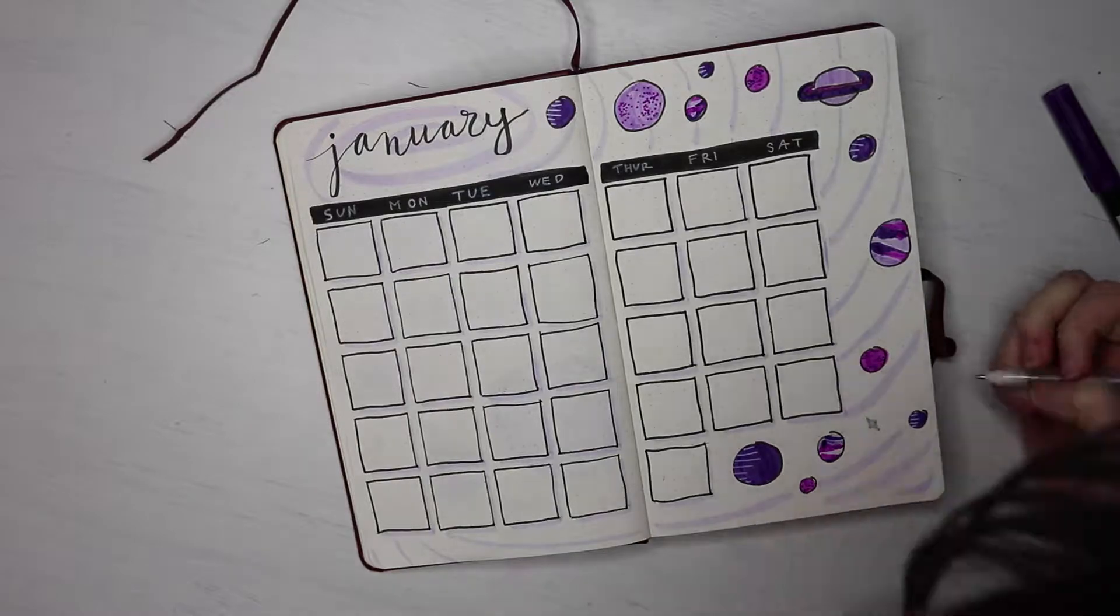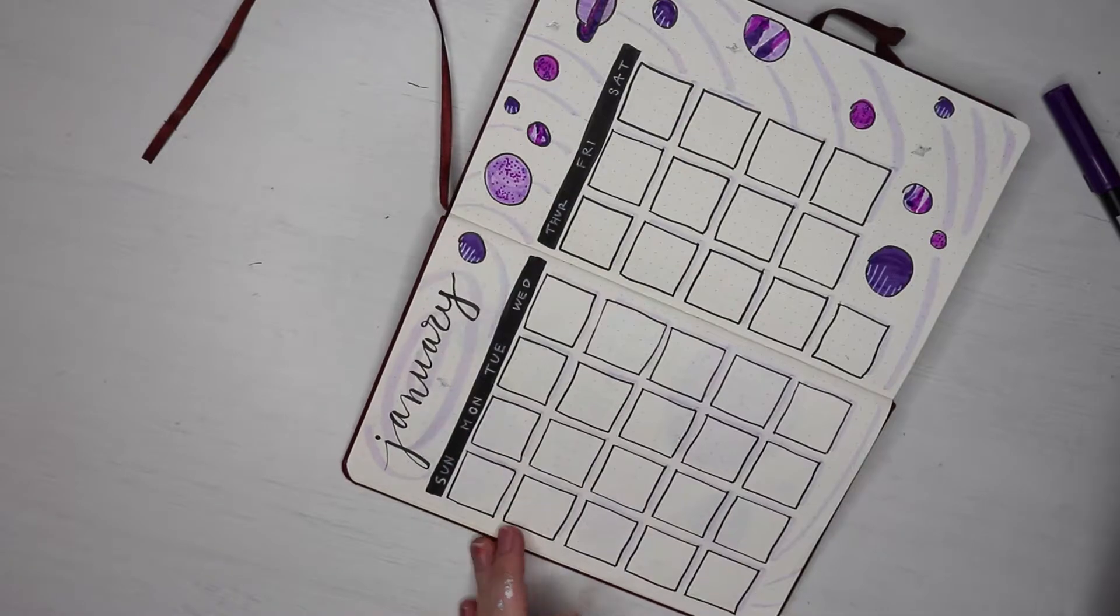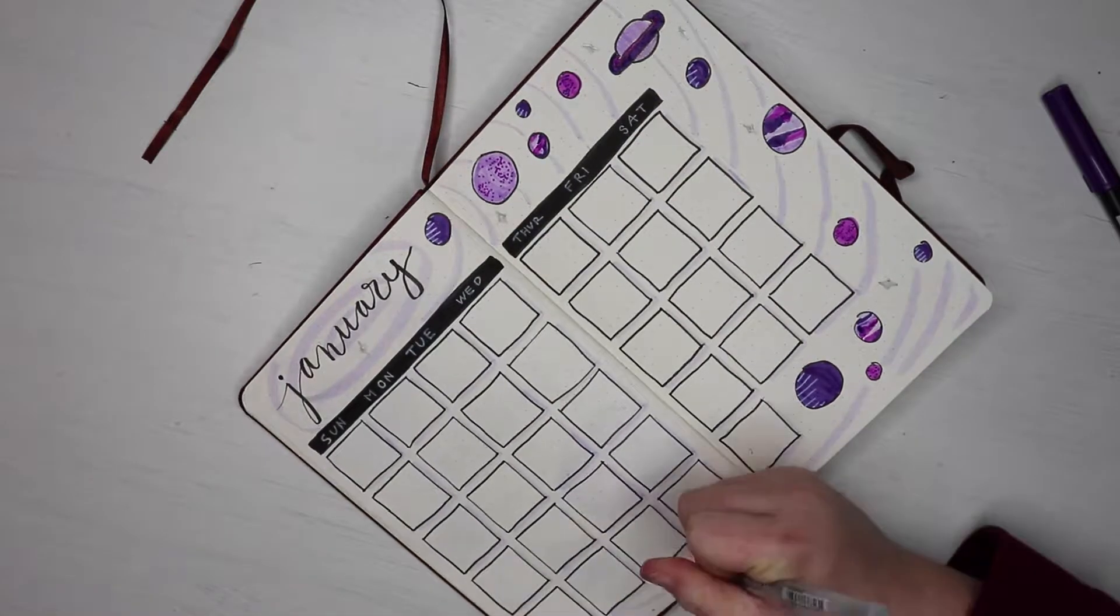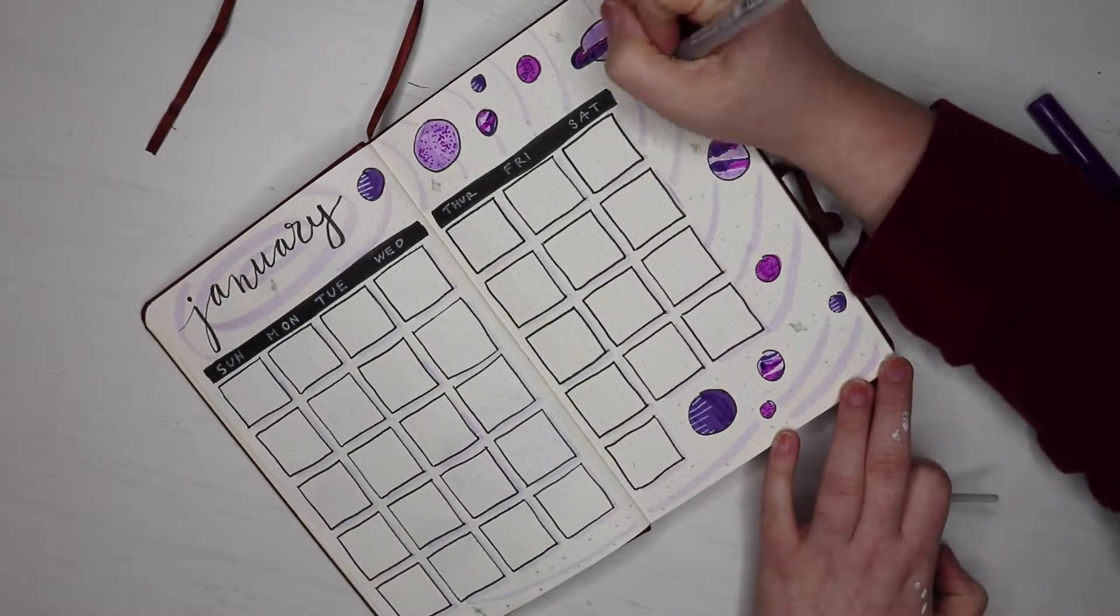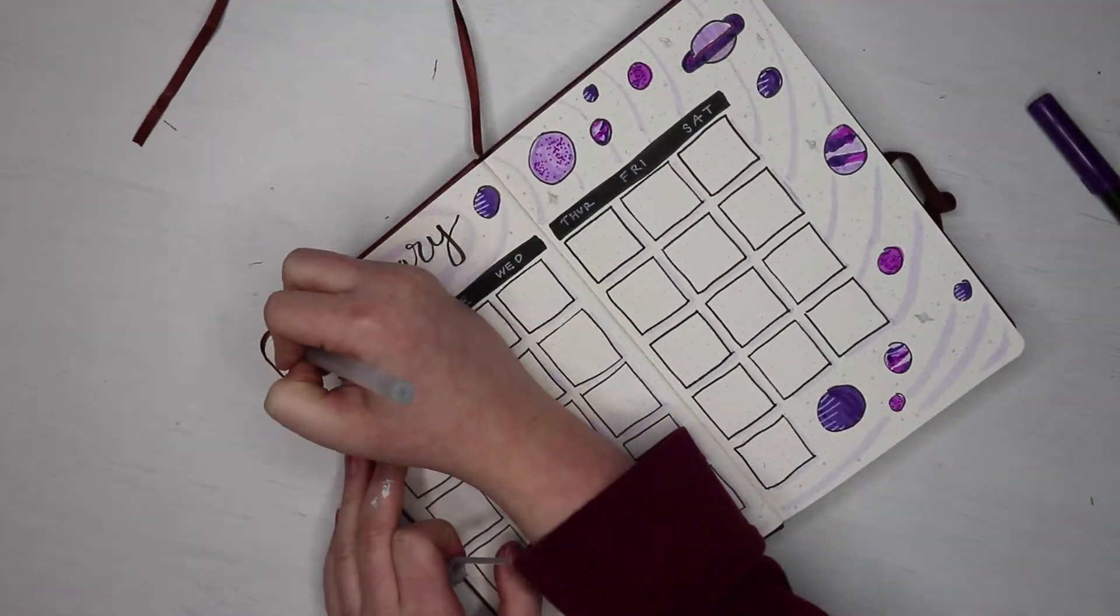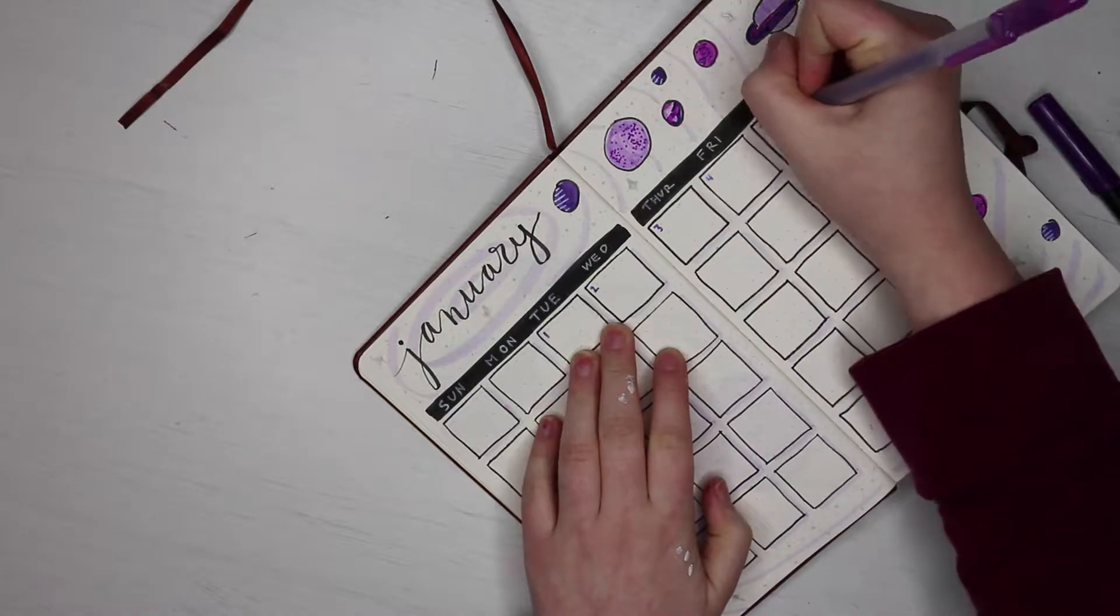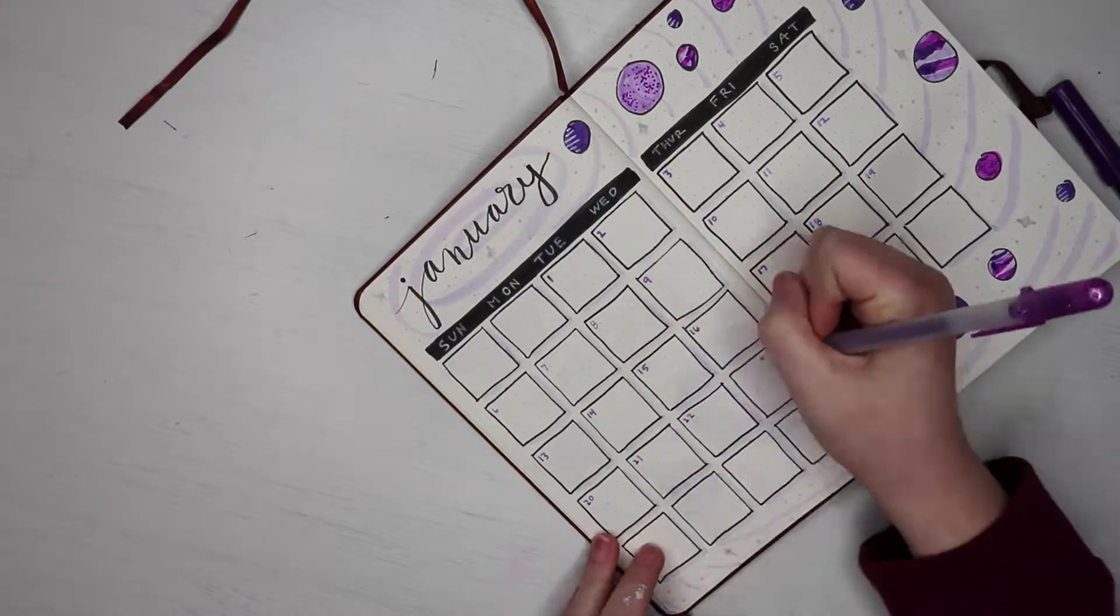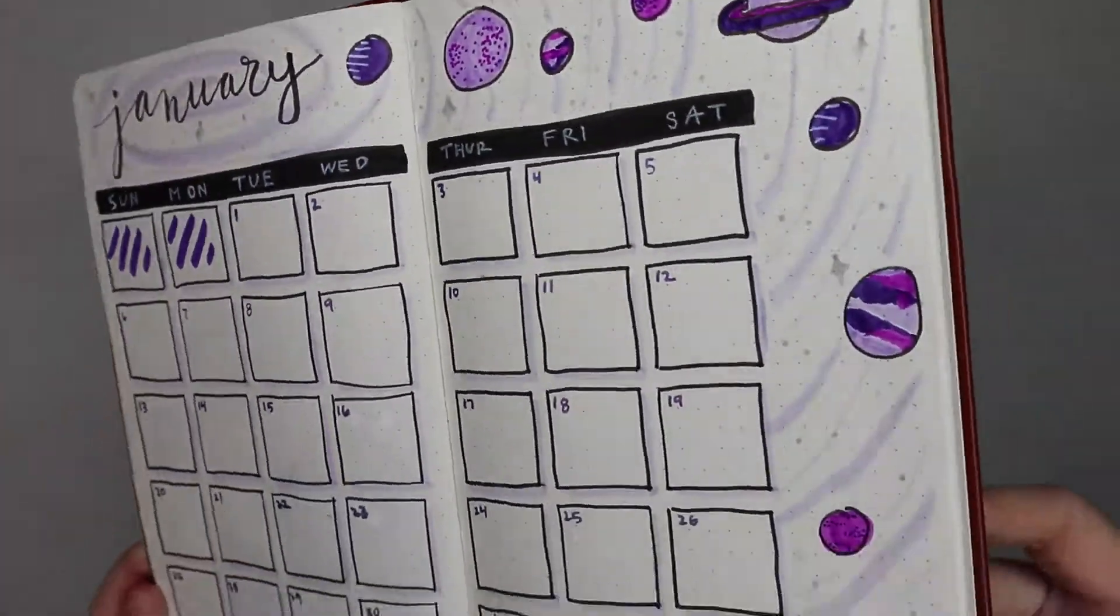So now I'm just taking that same silver metallic jelly roll and adding stars all over just like I did on the front cover. And then off camera, I didn't realize I did this, but I also added those thin lines and then the silver lines and the thicker purple lines. And now I'm just going to be taking the purple metallic jelly roll and I'm just going to be labeling the days of the month. And that is my finished monthly setup.